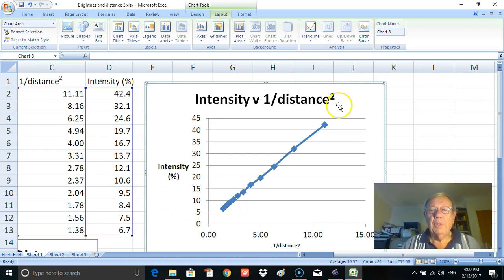So we can see there that the shape of that graph is linear. It does indicate that intensity and 1 over distance squared are related in a proportional way, simple proportional. What I'm going to do then is to in fact put in a line of best fit.